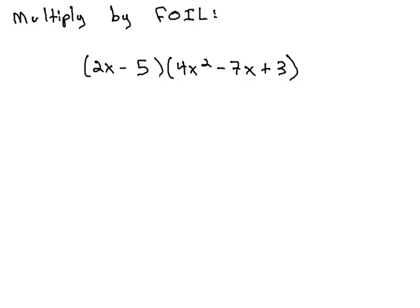FOIL's idea is that we multiply the first term of a polynomial through the second parentheses. Then, we can multiply the next term and the next through the parentheses.